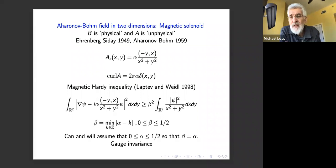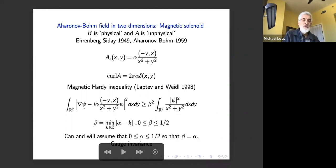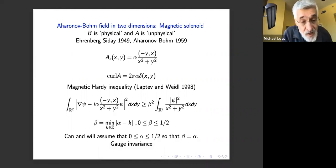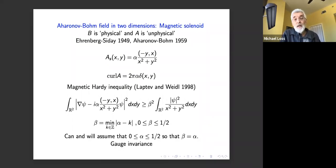From the calculus of variations viewpoint, there is a magnetic Hardy inequality, observed by Laptev and Weidl (1998). The Hardy inequality has a factor β² where β is the nearest distance of α to the integers. When α = 0 the Hardy inequality is false — ψ need not vanish at the origin. When α ≠ 0 it is true. This is an interesting statement with several things to investigate.